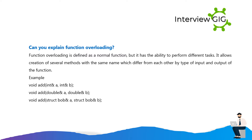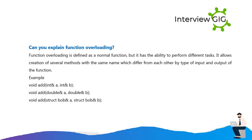Can you explain function overloading? Function overloading is defined as a normal function but it has the ability to perform different tasks. It allows creation of several methods with the same name which differ from each other by type of input and output of the function. Example: void add(int a, int b); void add(double a, double b); void add(struct Bob a, struct Bob b).